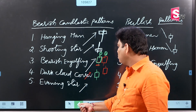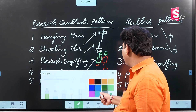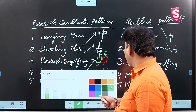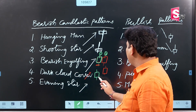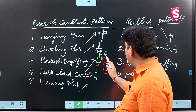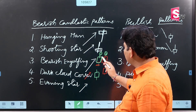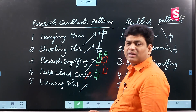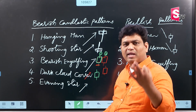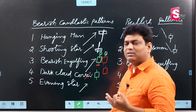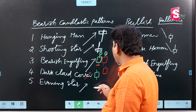What is the major significance of the evening star? If you look at one-candle patterns versus multi-candle patterns, the evening star is actually a 3-candle pattern. So let's talk about these 3 candles.